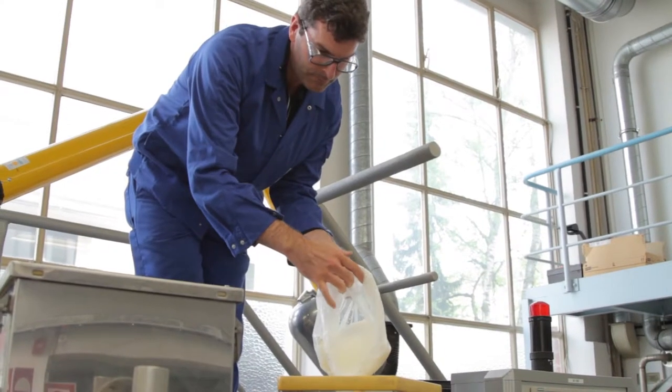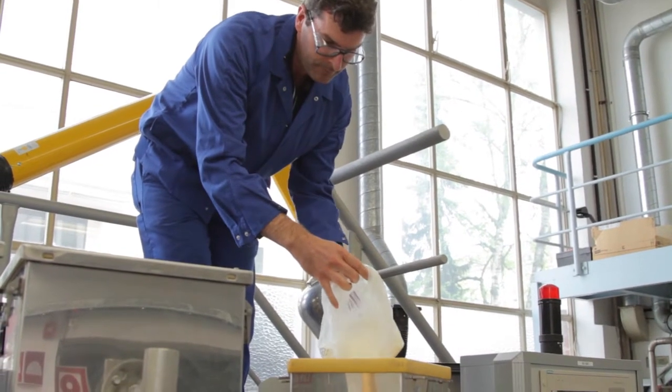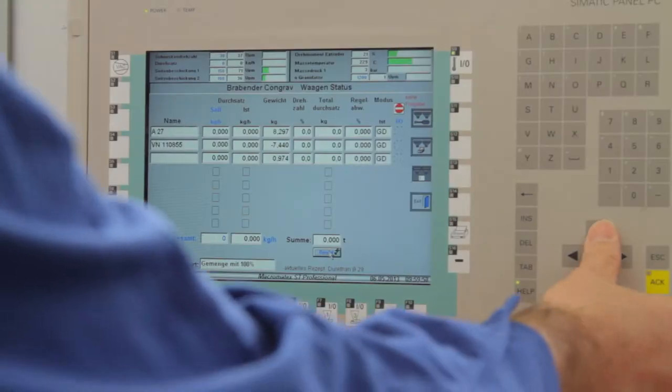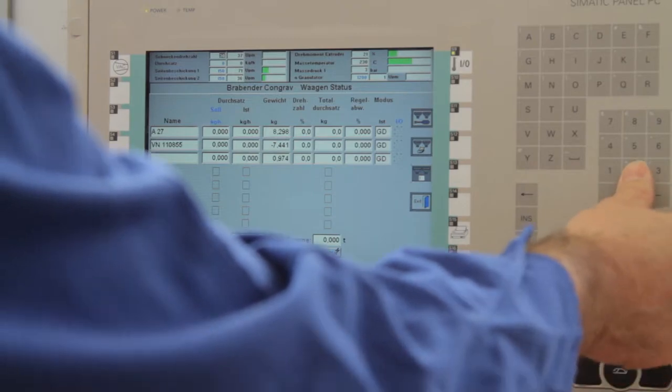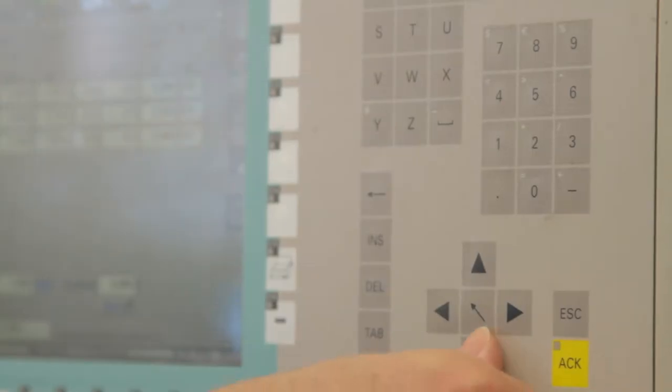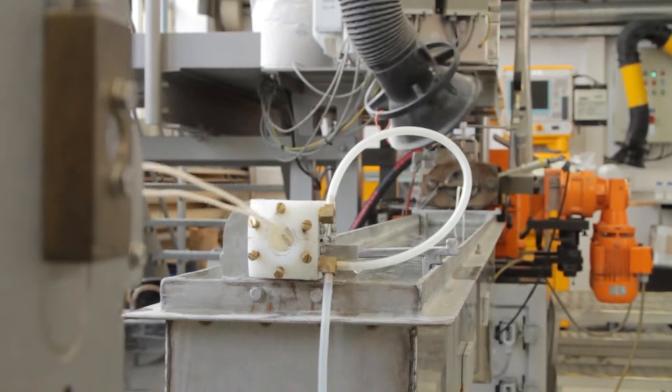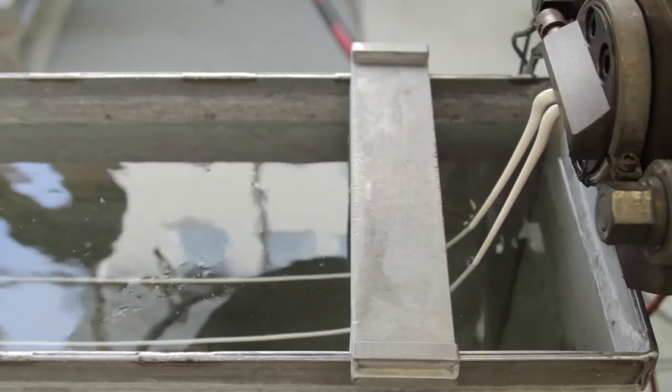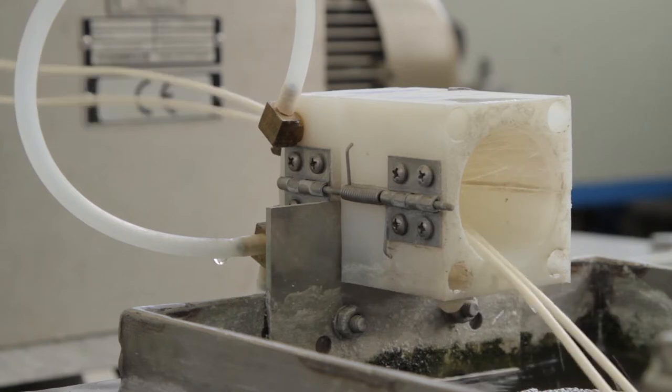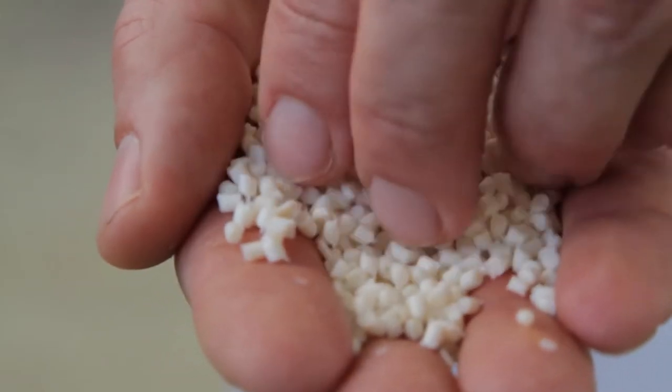Compounding consists of preparing plastic formulations by mixing polymers and additives in a molten state to achieve a homogenous blend of the different raw materials. Dispersive and distributive mixing as well as heat are important factors. Twin screw extruders are the most commonly used compounders in the plastic industry.